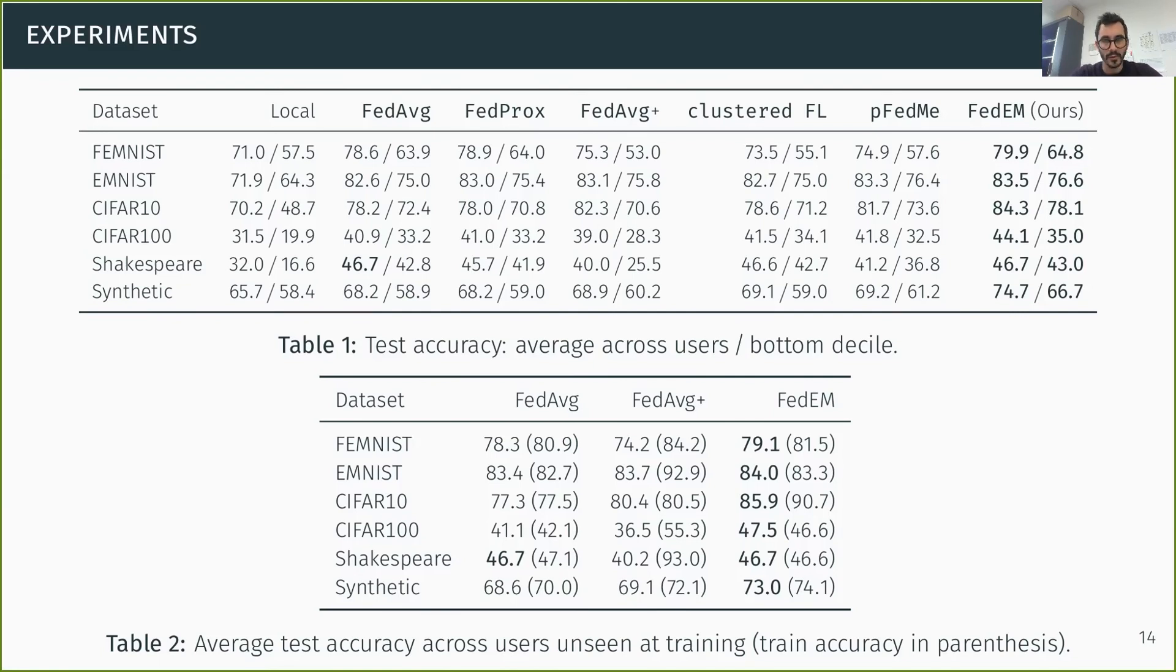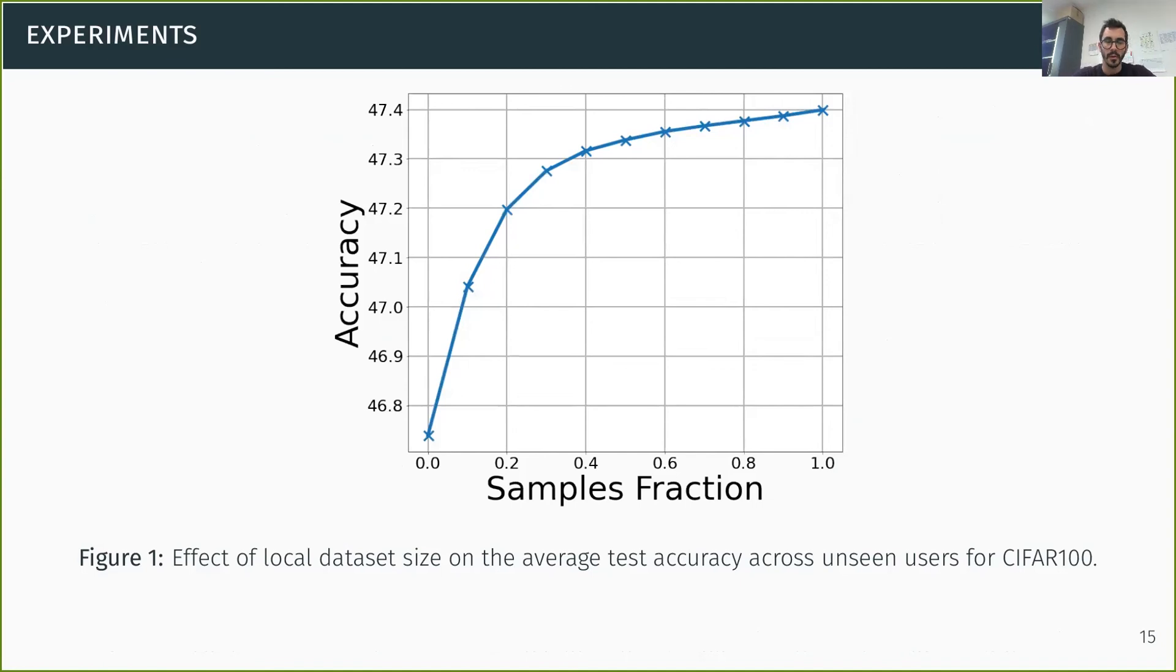We also showed that our approach does very good on unseen users, the ones that did not participate in training. I have explained how we can easily have these users retrieve the component parameters, and then they just locally compute their weights. And we can see here that compared to federated averaging and federated averaging plus, we get much better models for unseen clients. And we have also pushed this evaluation further by looking at how the performance for unseen users depends on the size of their training data set, which can be scarce in practice for unseen users. And we see that starting from having no labeled data points, in which case the new user just uses the uniform weights, and then as the user gets more points, it can adjust the weights accordingly. And we see that the accuracy improves quite fast with the proportion of samples that are available.